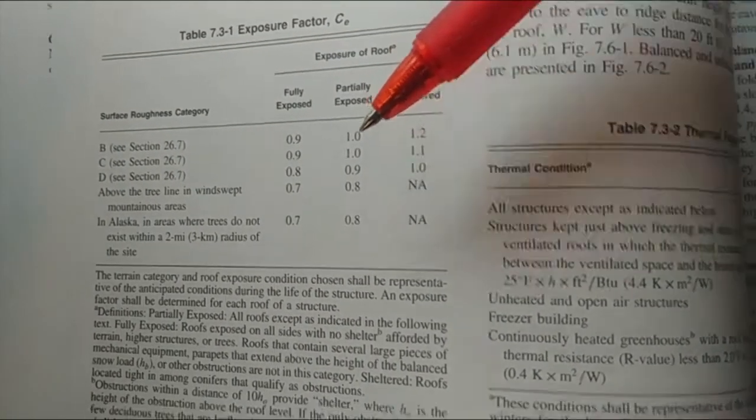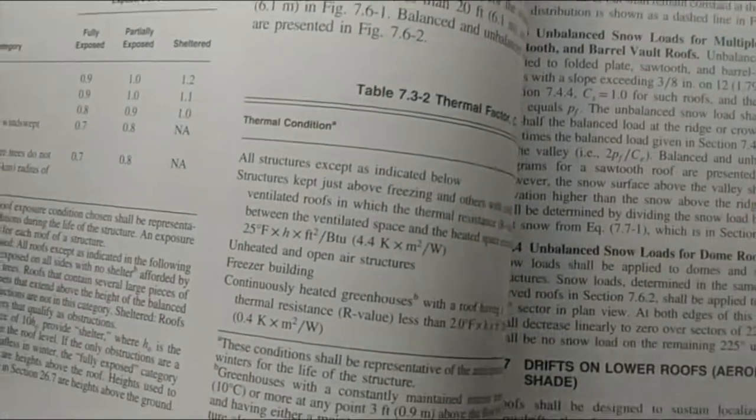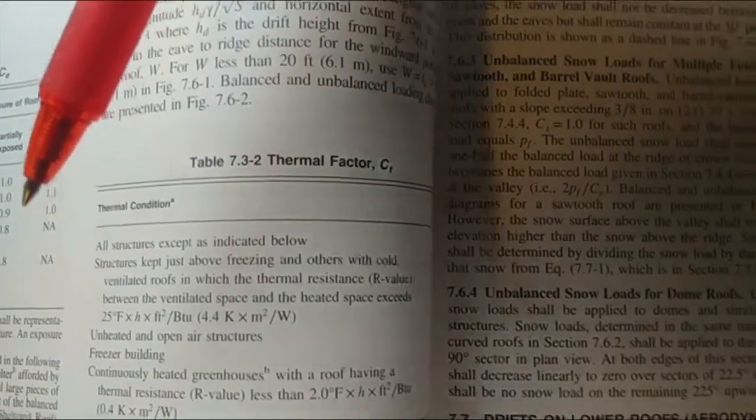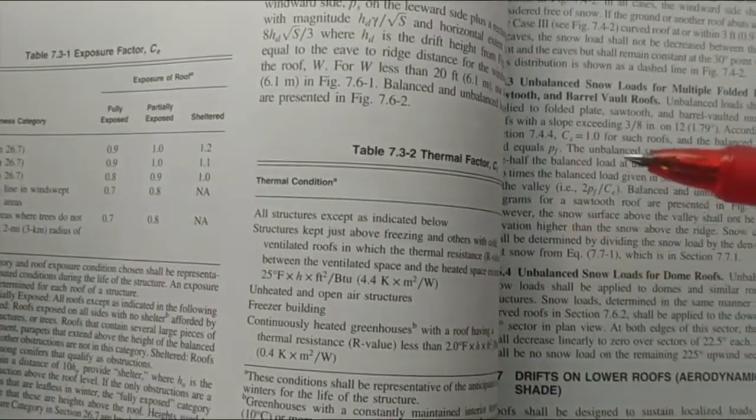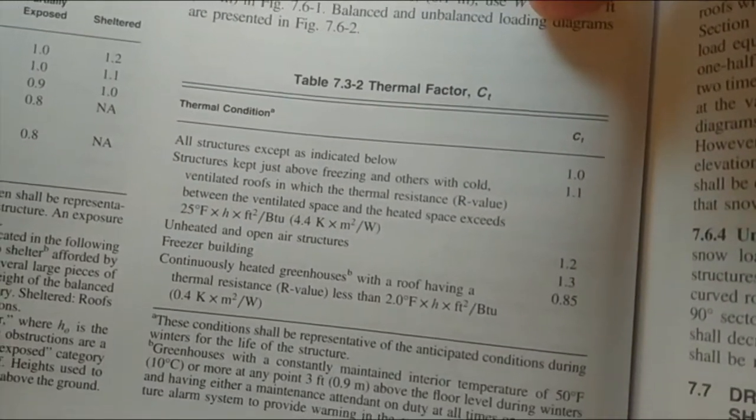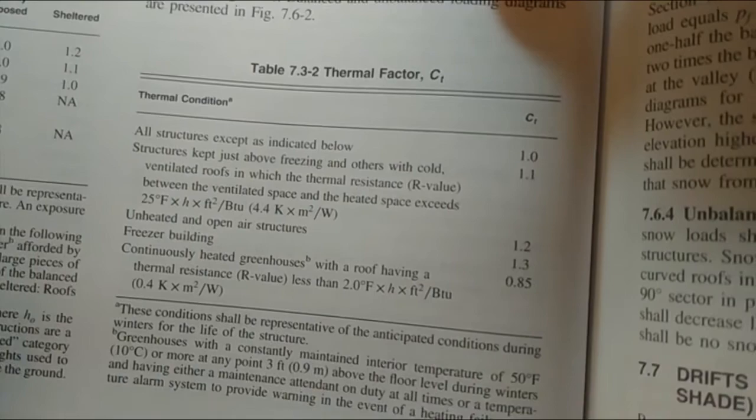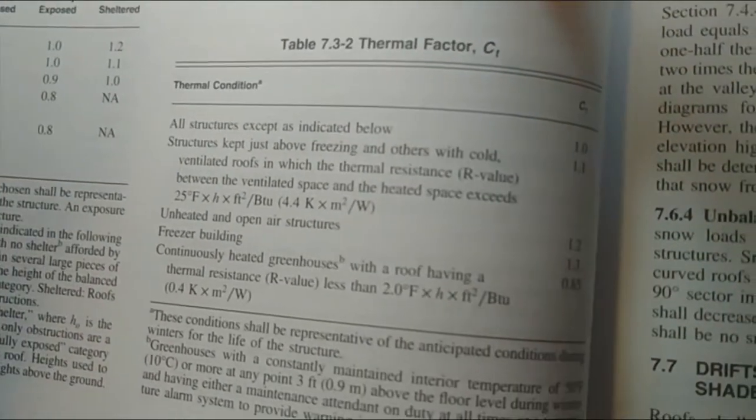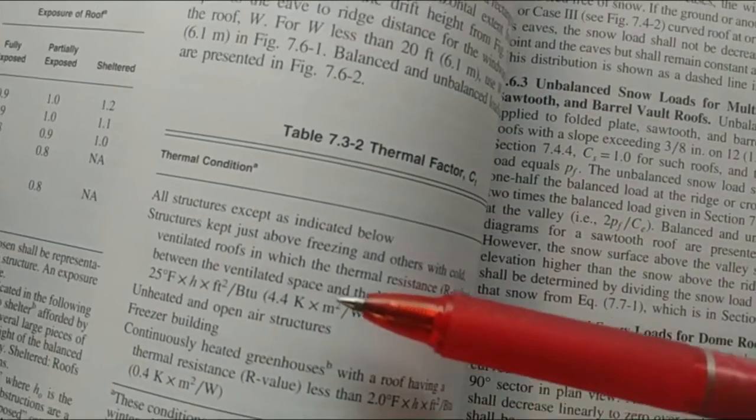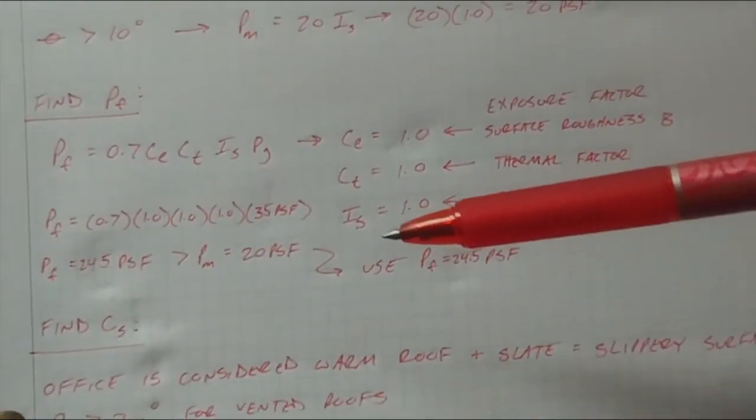Now, next we have C_T, right? That's the last variable we have, and that's your thermal factor. So again, same page, the next table, 7.3-2. Your thermal factor will go into different criteria here and then give you a value. It goes into freezer buildings, unheated and open air structures, continuously heated greenhouses, structures kept just above freezing, or all other, all structures except indicated below. So all those other weird structures, if it's not one of those special cases, then it's the top one, which comes out to C_T of 1.0. So 1.0, 1.0, that's easy, and we know our importance factor is 1.0.